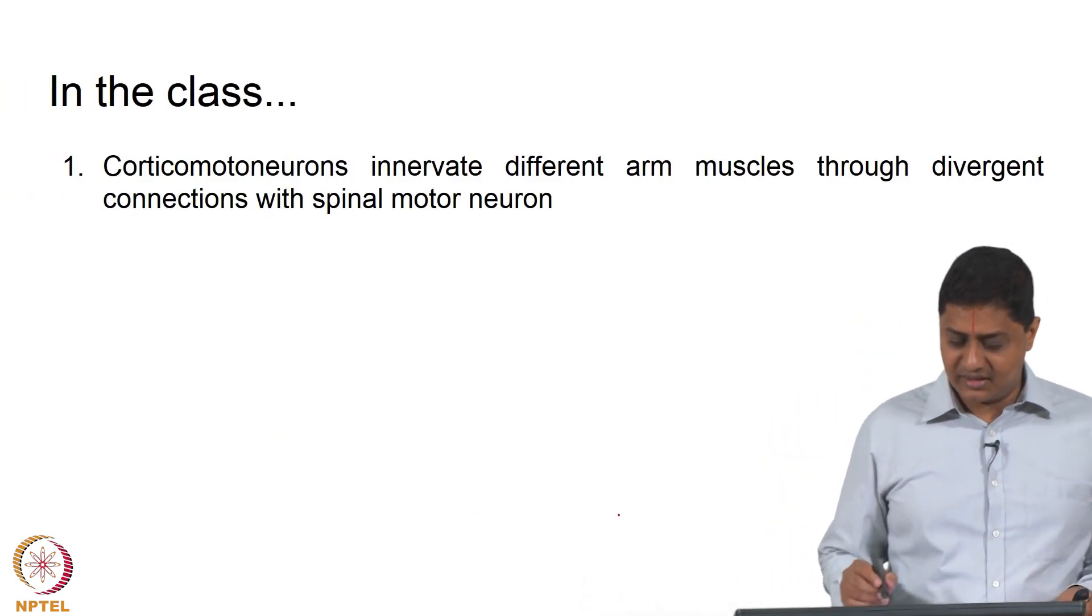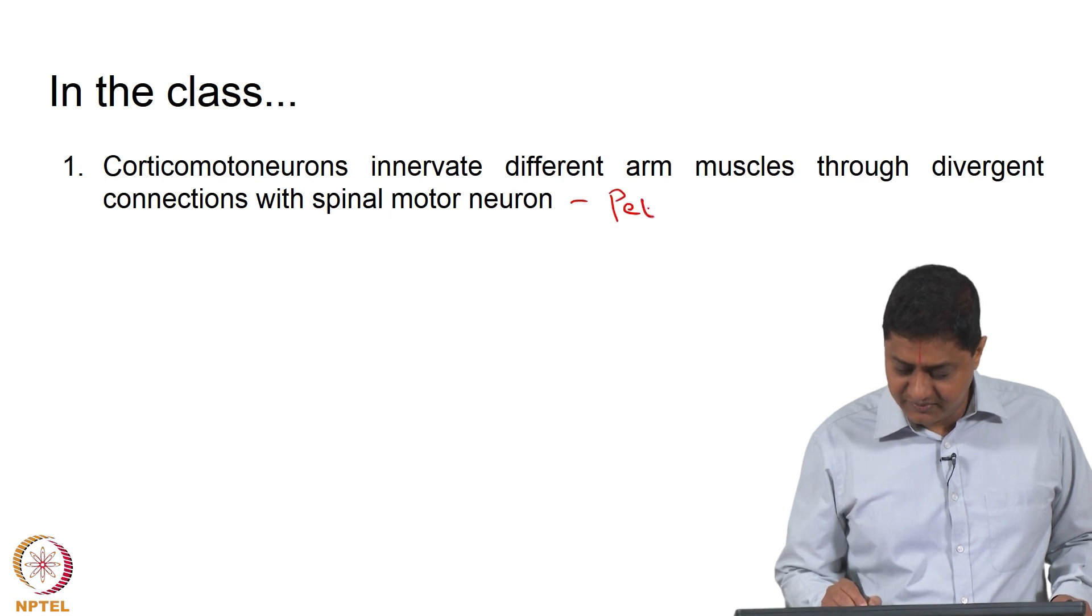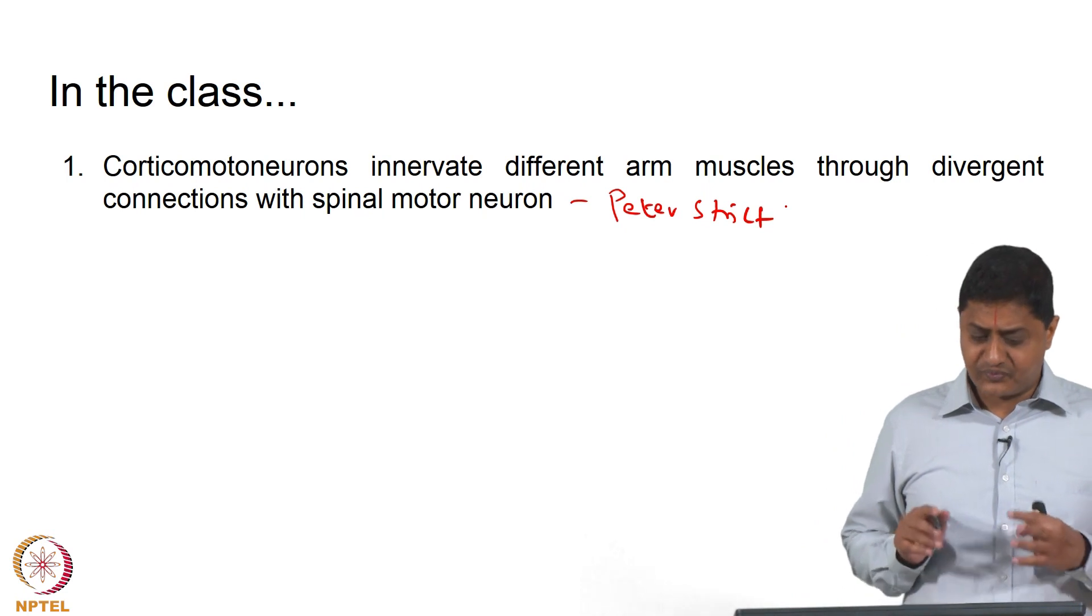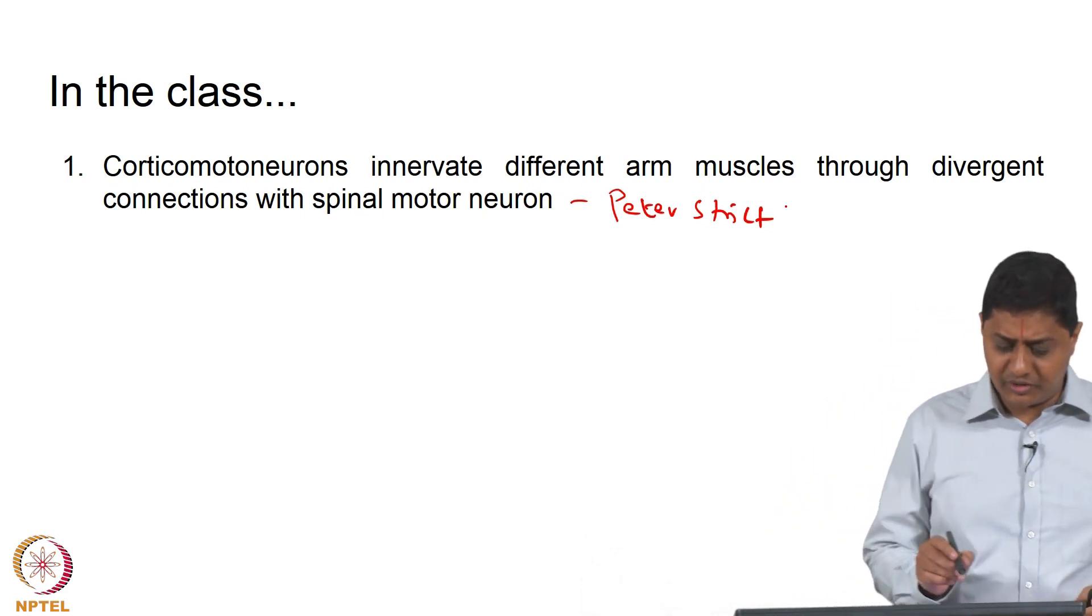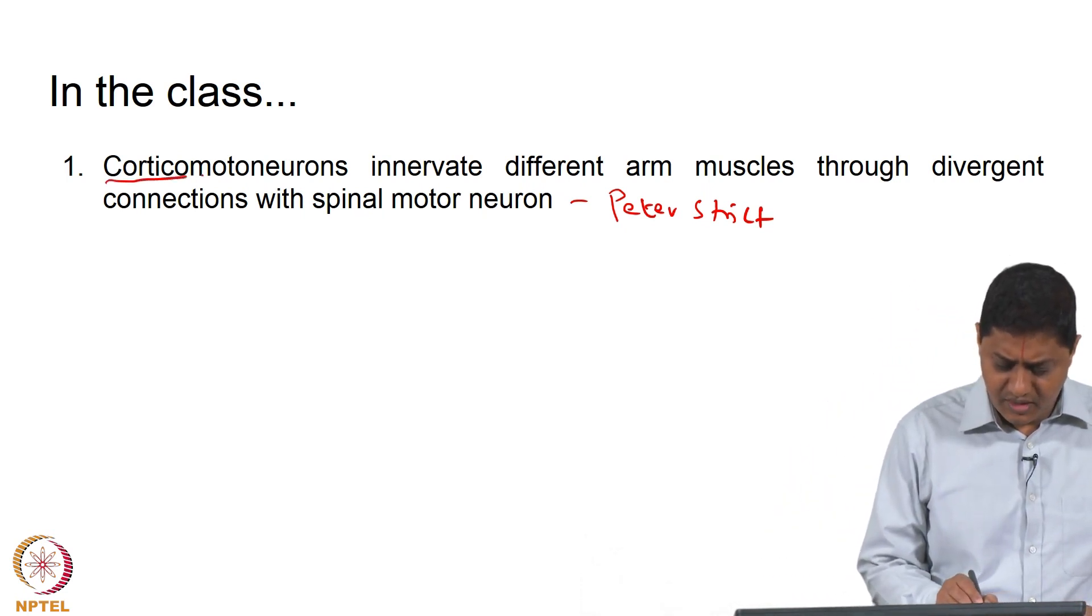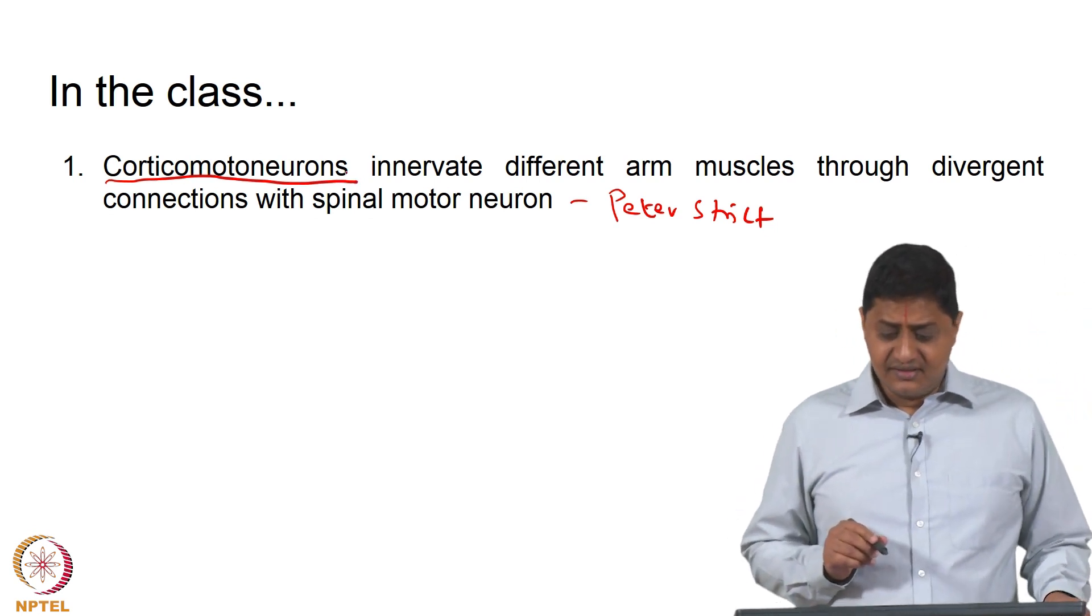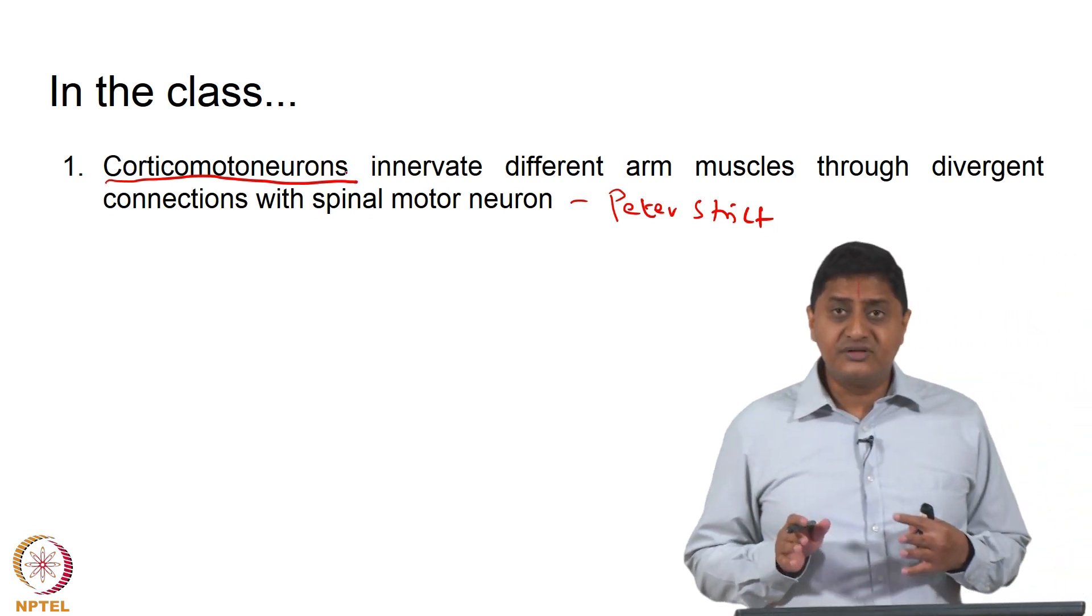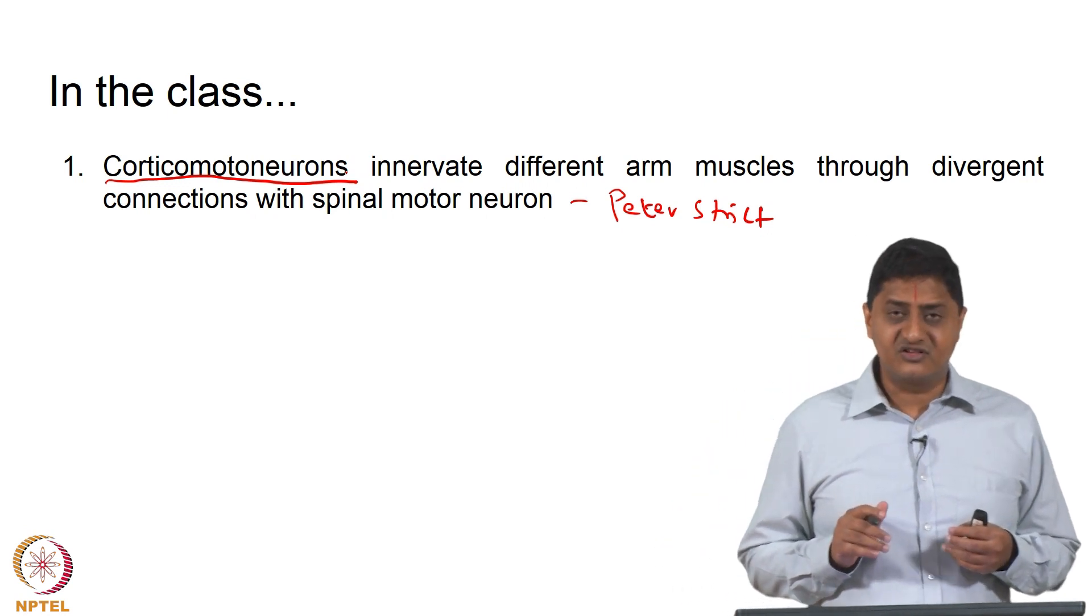A group of neurons called corticomotor neurons innervate different arm muscles through divergent connections with spinal motor neurons. What are these? We will have to discuss what this is.